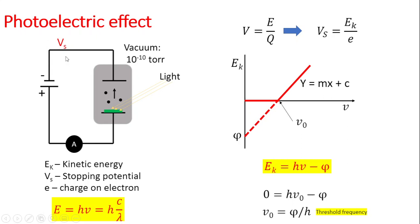The stopping voltage can be used to calculate the energy of the electrons. Using the equation V = E/Q, where E is energy and Q is charge, we can write Vs = Ek/e, where Ek is kinetic energy and e is the charge on an electron. Using this, you can calculate the kinetic energy.